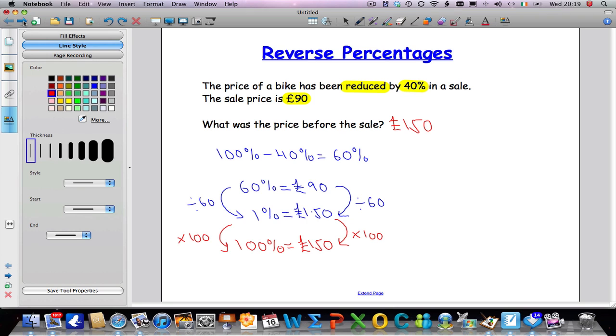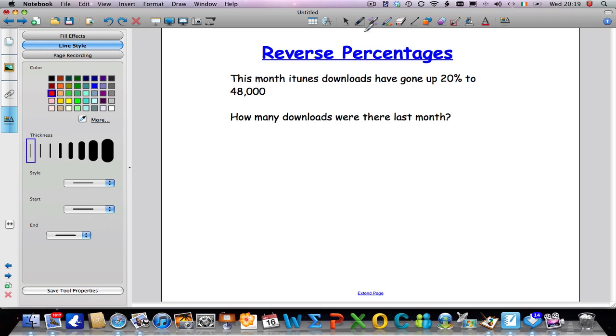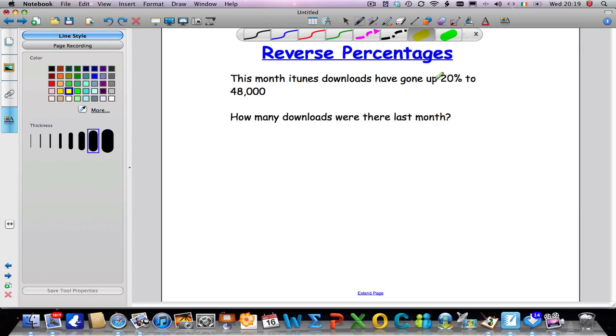Let's have a look and see what happens when something increases. This month, iTunes downloads have gone up. That's the important information. They've gone up 20% and they've gone up 20% to 48,000. And we're asked how many downloads were there last month.